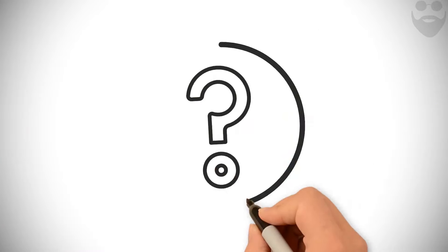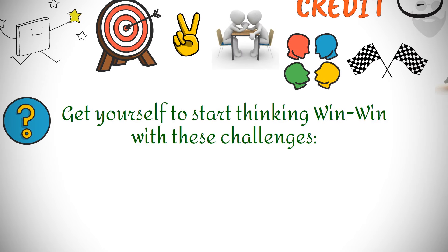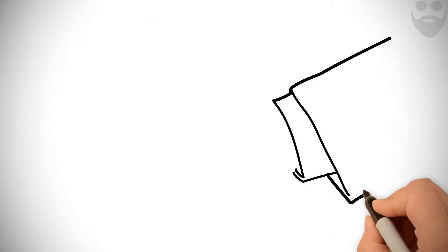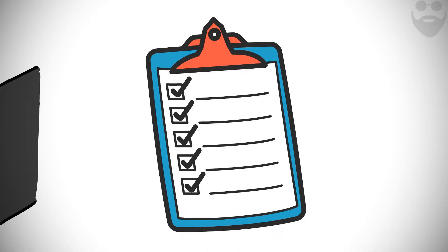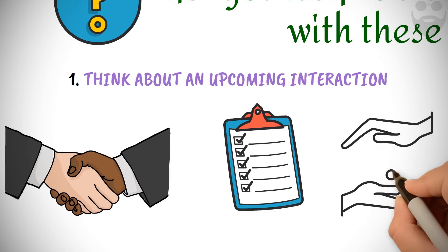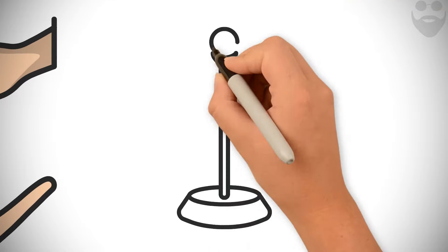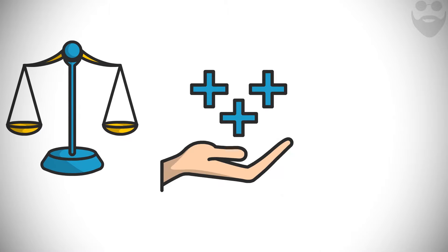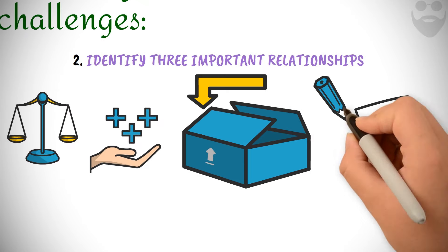So what are the key lessons? Get yourself to start thinking win-win with these challenges. 1. Think about an upcoming interaction where you'll be attempting to reach an agreement or solution. Write down a list of what the other person is looking for. Next, write a list of how you can make an offer to meet those needs. 2. Identify three important relationships in your life. Think about what you feel the balance is in each of those relationships. Do you give more than you take? Take more than you give? Write down 10 ways to always give more than you take with each one.